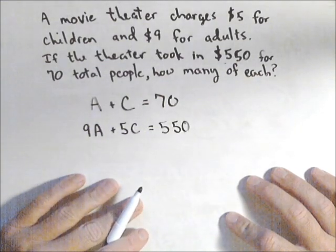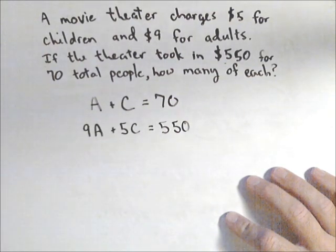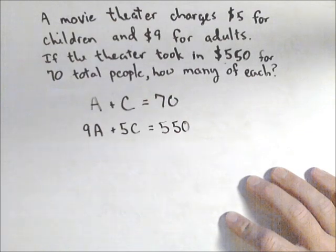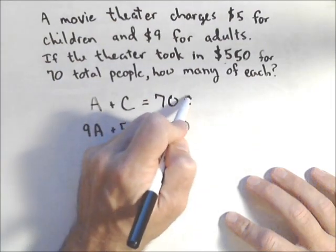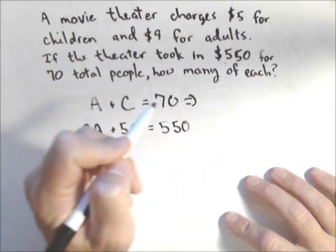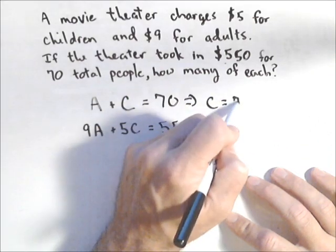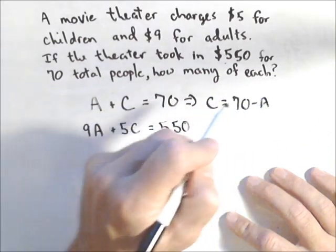Now that we have our system, you can go through any number of ways of solving it — substitution, elimination, matrices, or graphing — all of them will work. We'll do substitution here because this is set up for it, so C equals 70 minus A.